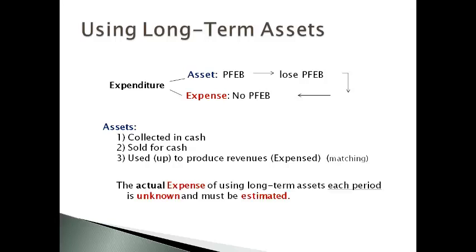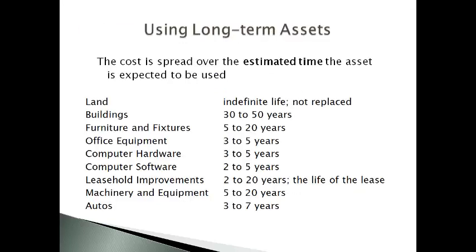The actual cost of using long-term assets during each period is not known, and the accountant must estimate the portion of the total cost of the asset that is used in each period. The cost of using long-term assets must be allocated to the time period the asset is used to produce revenues.